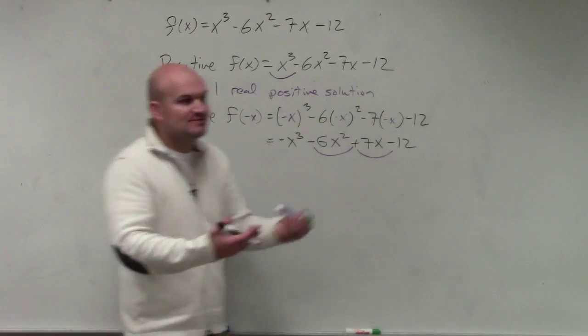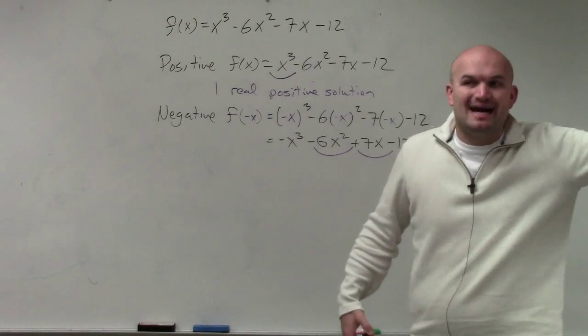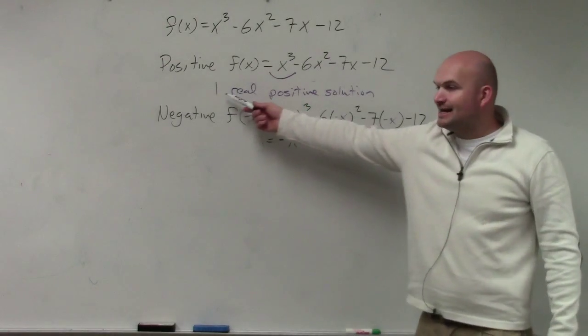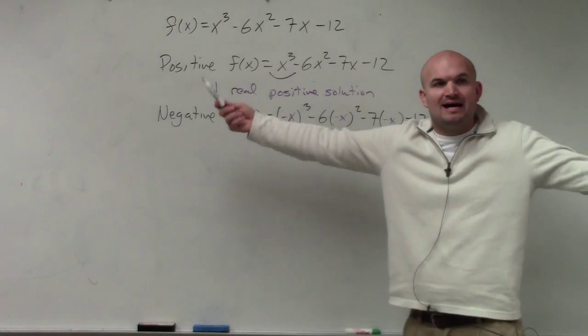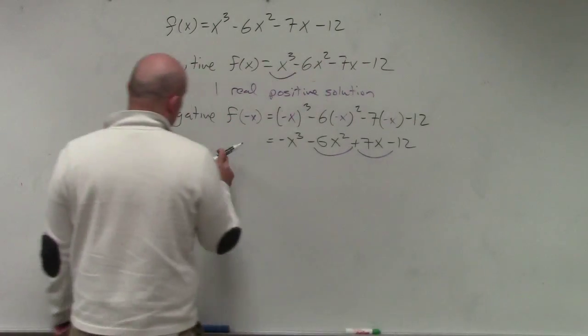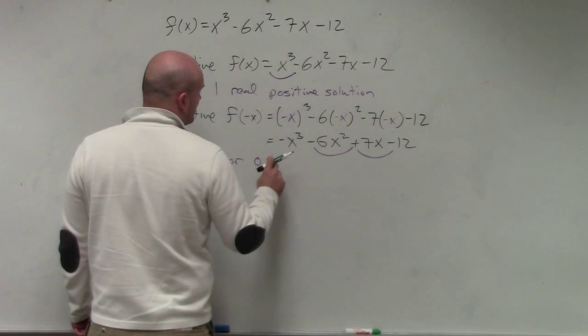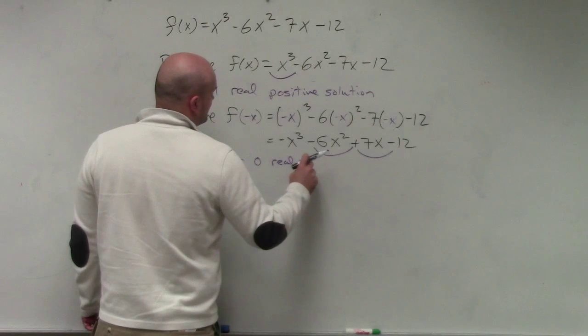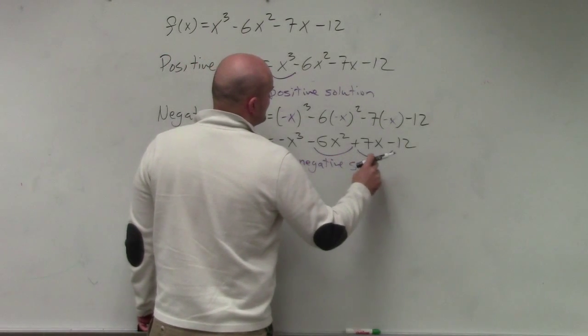So there's 2. But remember, Descartes' rule of signs, and this is what everybody forgets, it's always the number of sign changes minus an even number. Well, I can't subtract an even number from 1 and still have a positive value. So I have to subtract. So in this case, I have 2 or 0 real negative solutions, or zeros.